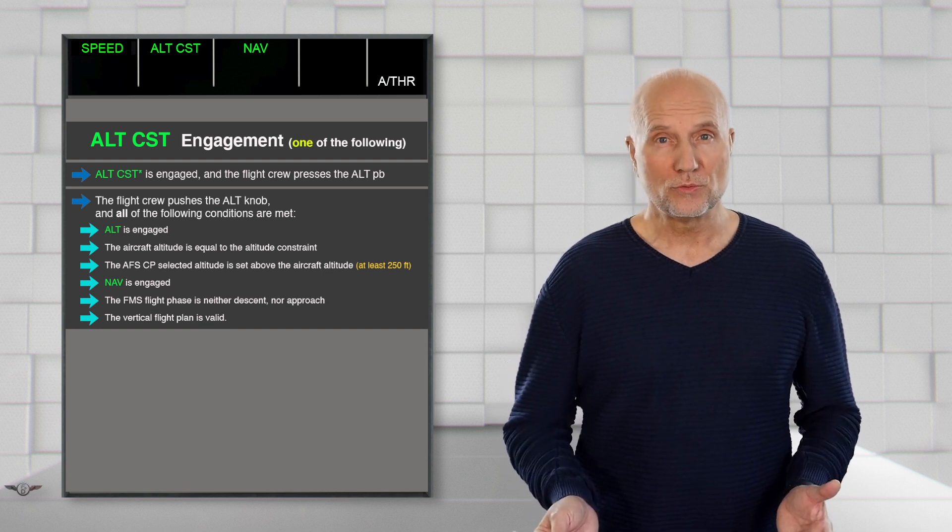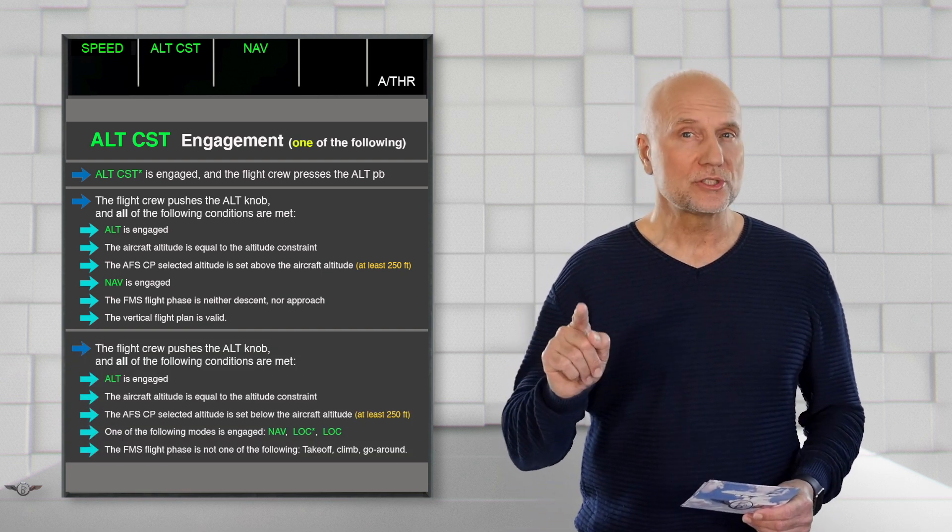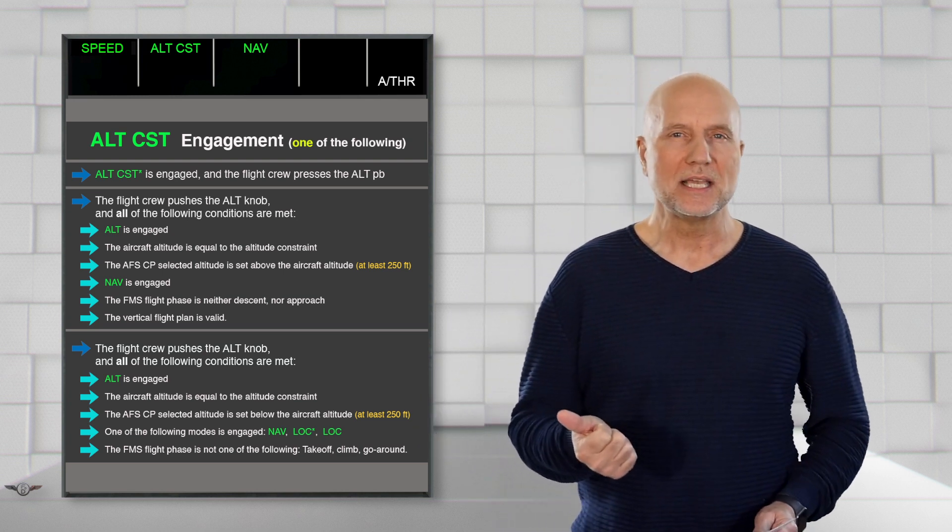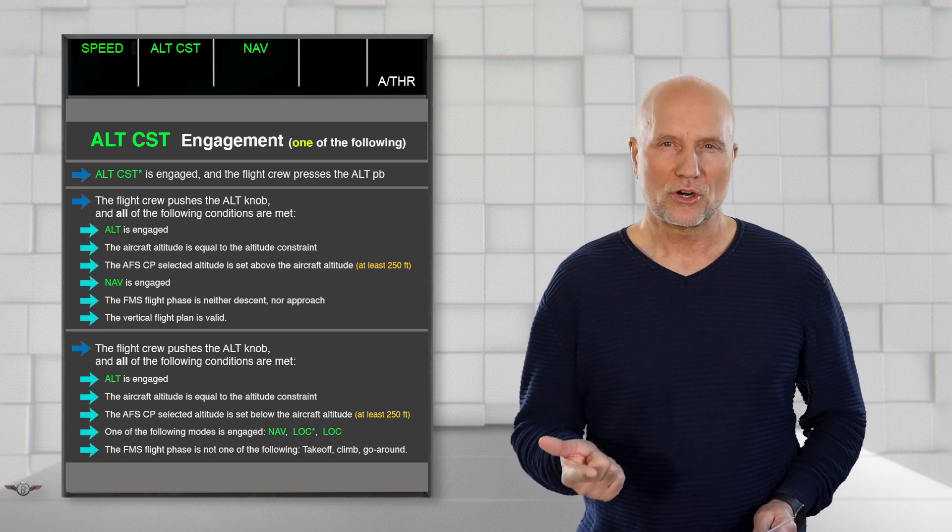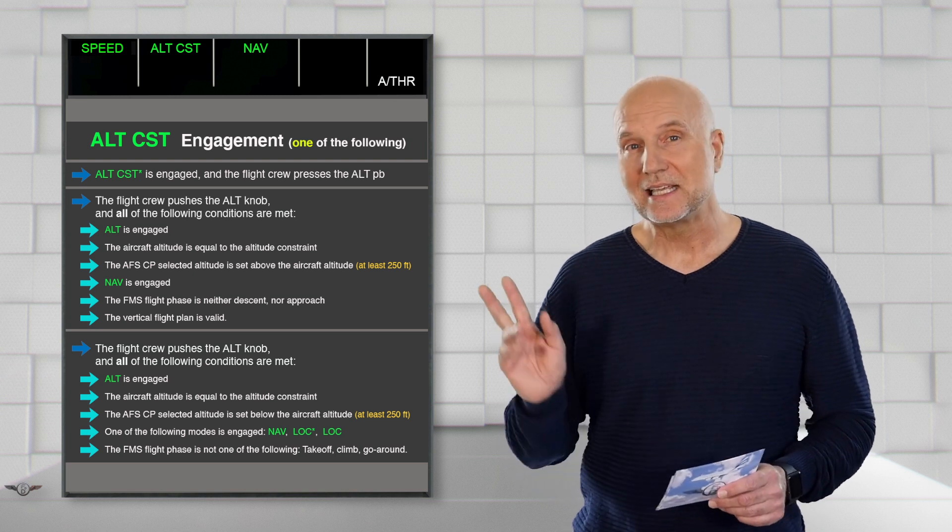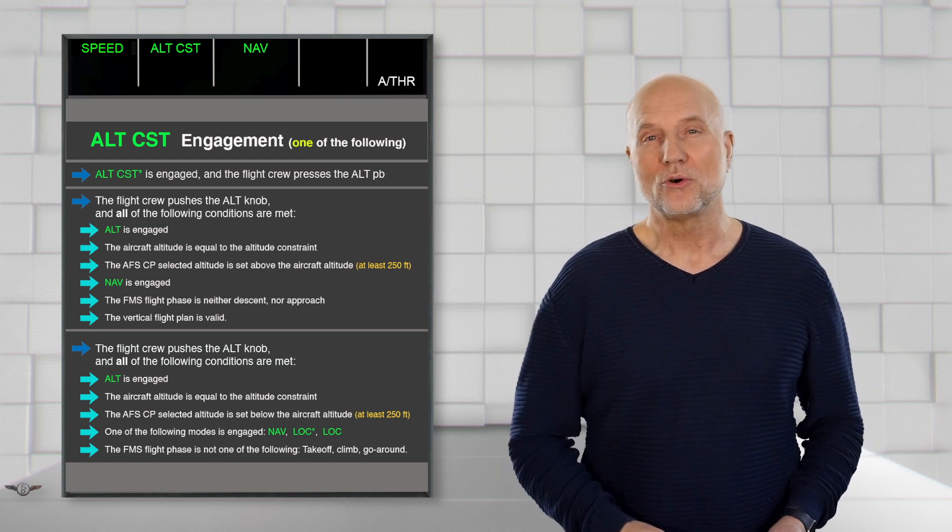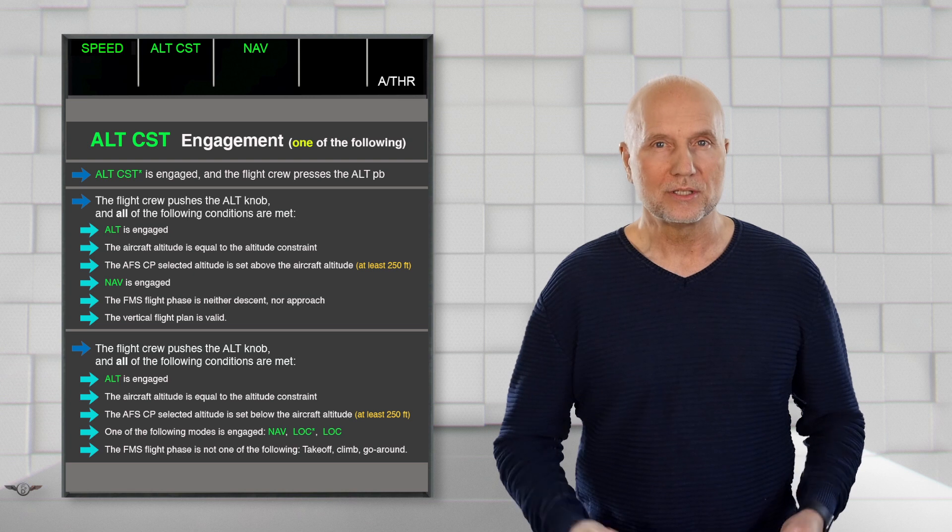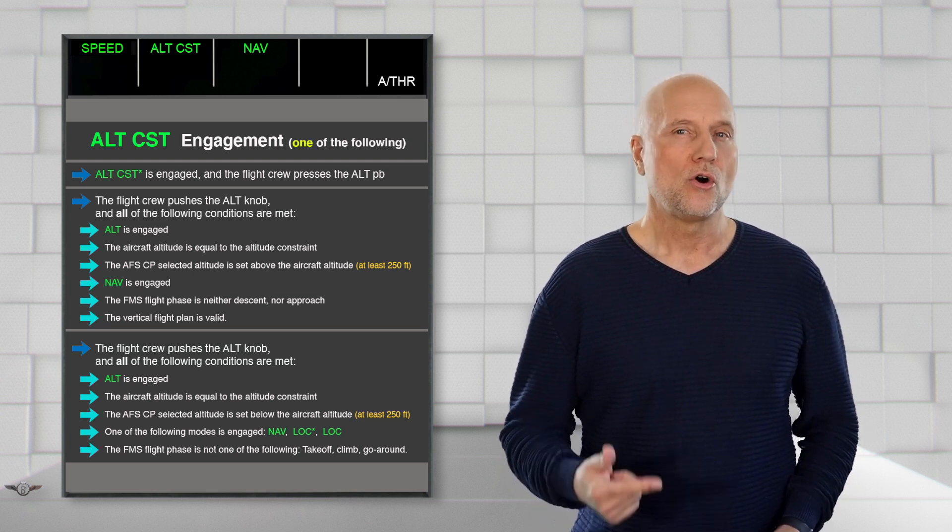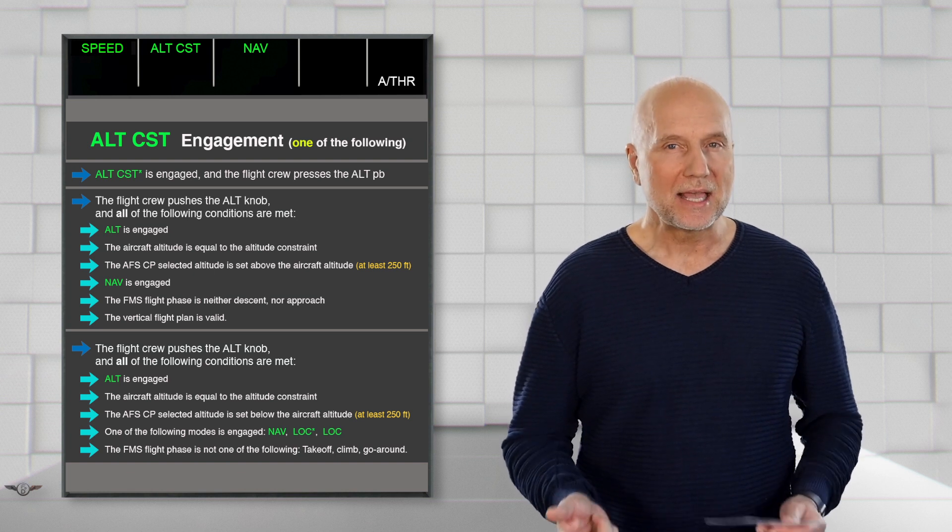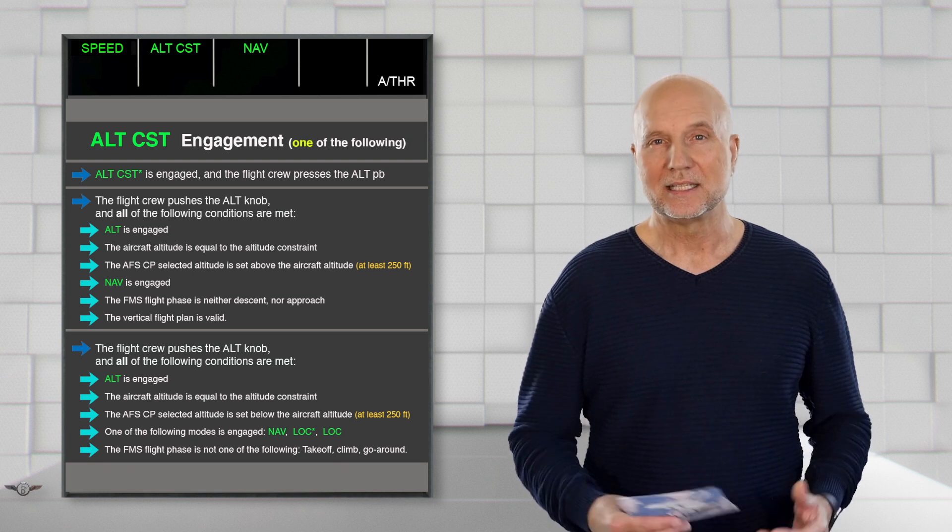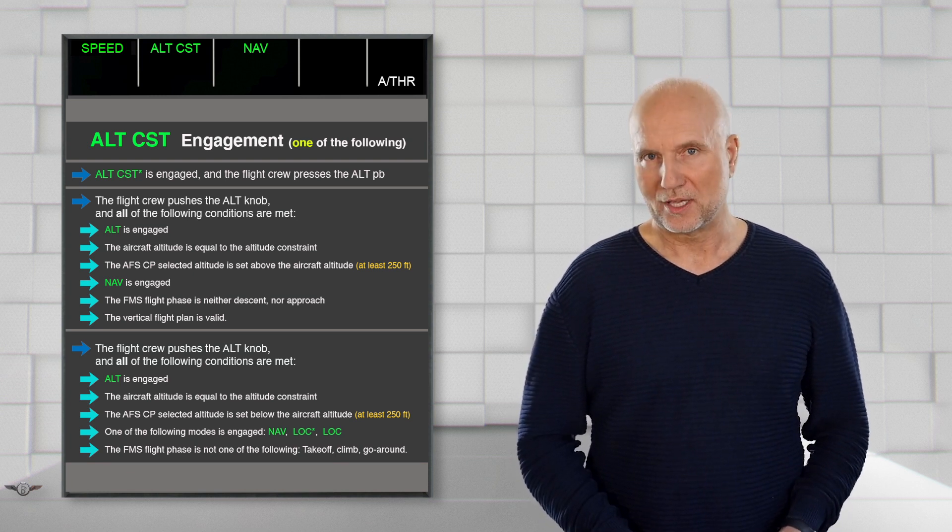The third option would be pushing the Altitude selector knob on the AFS-CP, but again only if Altitude is engaged. The aircraft Altitude corresponds to the constraint altitude. This time the Altitude set in the Altitude selector window on the AFS-CP is lower than the aircraft Altitude. NAV or LOC star or LOC is engaged and the FMS flight phase is not in takeoff or climb or go-around phase.